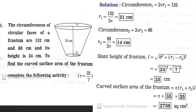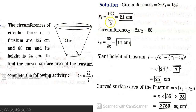Question 3. The circumferences of the circular faces of a frustum are 132 cm and 88 cm, and its height is 24 cm. Find the curved surface area. Pi = 22/7. Circumference 1: 2πR1 = 132, so R1 = 132 ÷ (2 × 22/7) = 21 cm. Circumference 2: 2πR2 = 88, so R2 = 88 ÷ (2 × 22/7) = 14 cm.